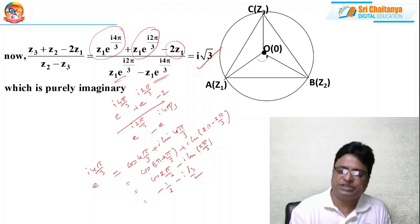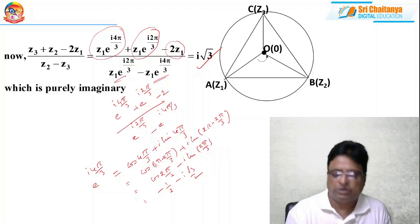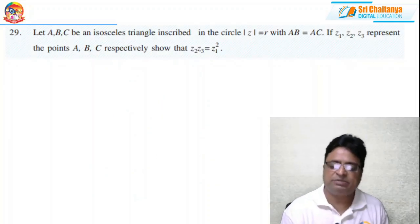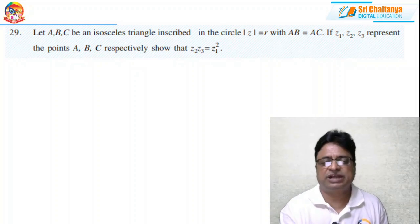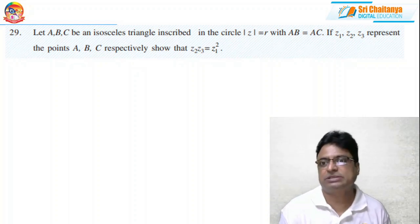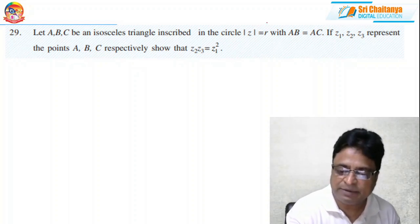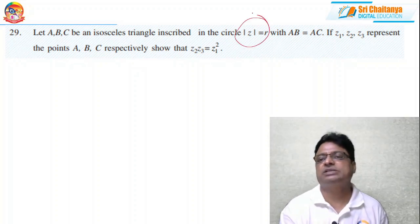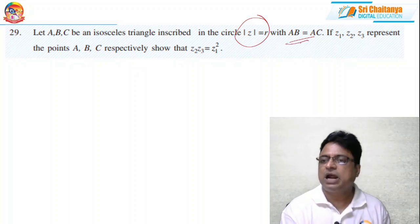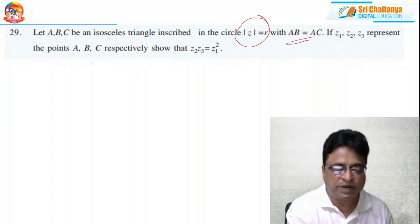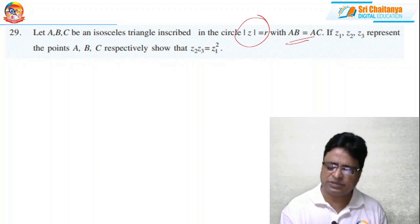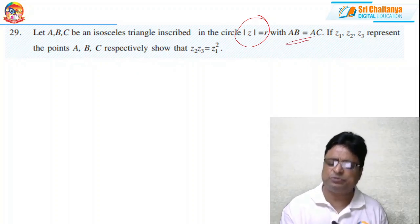So this is the concept — clear. Now coming to problem number 29. It is also a similar problem to problem 28. Here the triangle ABC is isosceles and inscribed in a circle of radius r, with AB equal to AC. Z1, Z2, Z3 represent the points A, B, C respectively. It is similar to the above question.